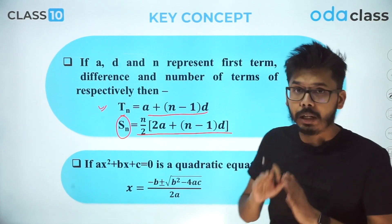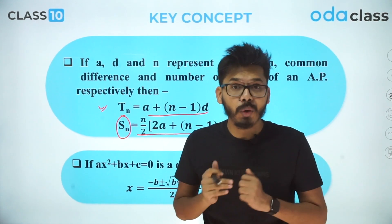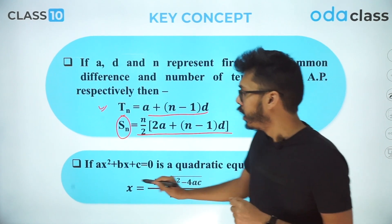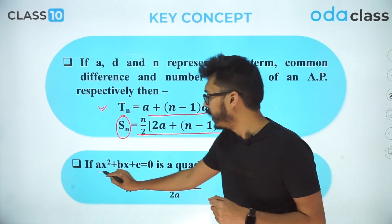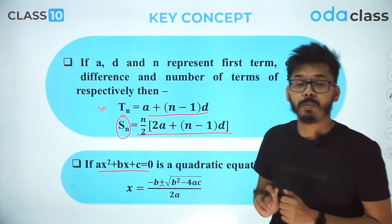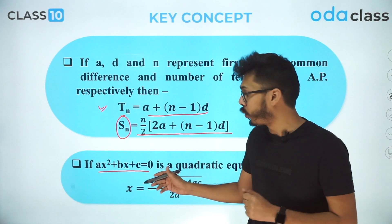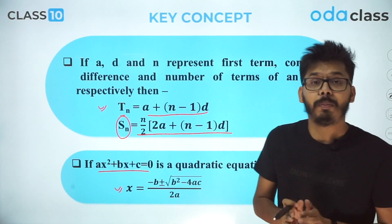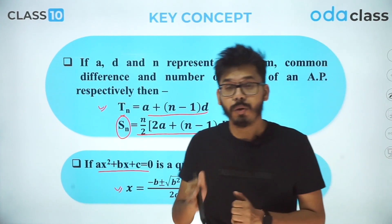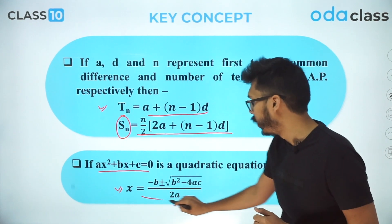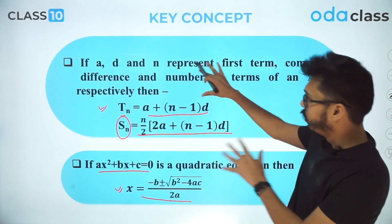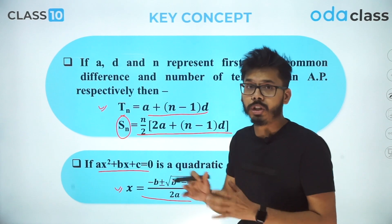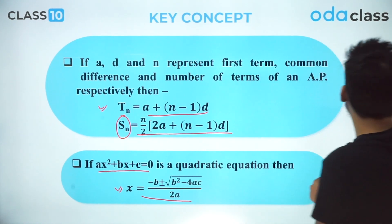The questions I've selected will also involve a bit of quadratic equations. If a quadratic is ax² + bx + c = 0, then x = [−b ± √(b²−4ac)] / 2a. Knowing these two concepts — the AP formulas and the quadratic formula — we're now going to tackle questions that are very important for the board exam.